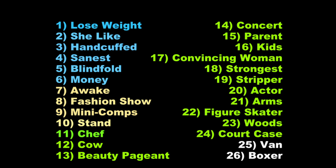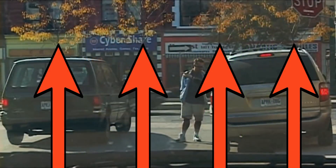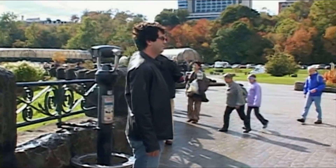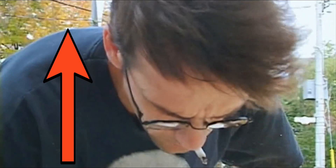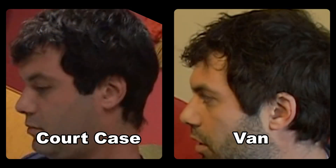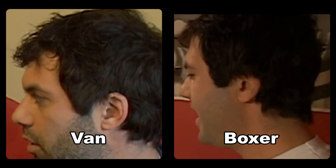The fall cycle is the shortest — it includes Van and Boxer. We can see the leaves changing colors in both episodes, and they're in the correct order. This tree is green in the Van episode and it starts to change color in Boxer. Also, Kenny got a haircut for the Court Case episode, and you can see it grow out in Van and then Boxer in that order.